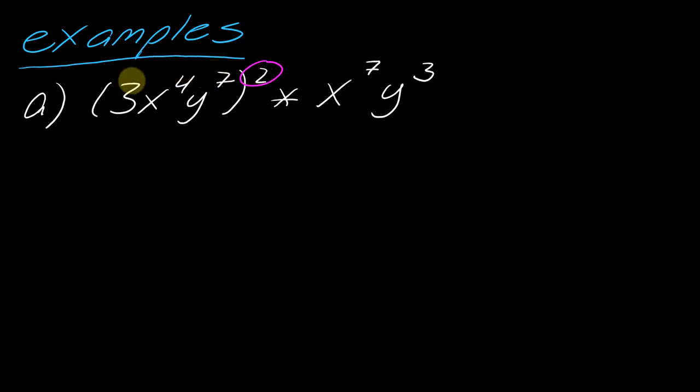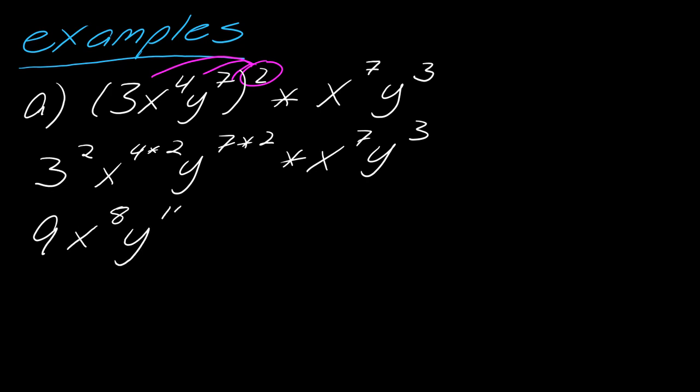I really need to distribute to all parts of this. So it needs to go to the 3, the x to the 4, and the y to the 7. This is a little bit of a plot twist. So I need to take 3 squared, then x to the 4th times 2, then y to the 7th times 2, and multiply all of that. Now you can see exactly what I'm doing. 3 squared is 3 times 3. Sometimes people will do 3 times 2 because they're thinking about this, but it's 3 times 3.